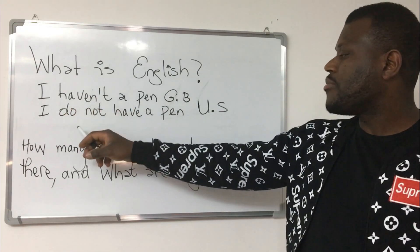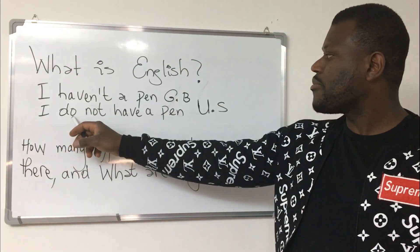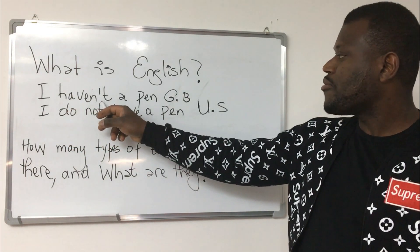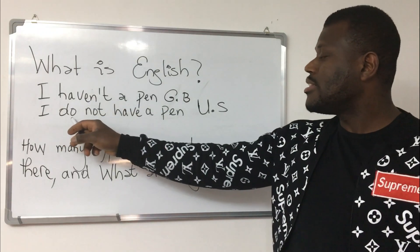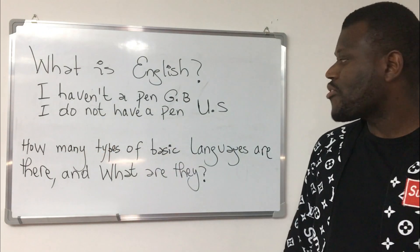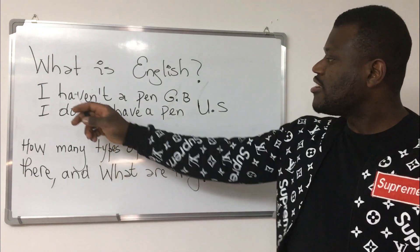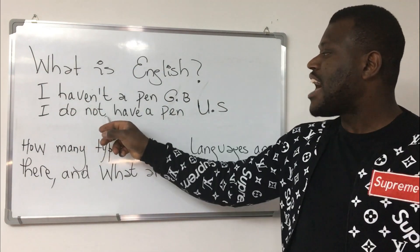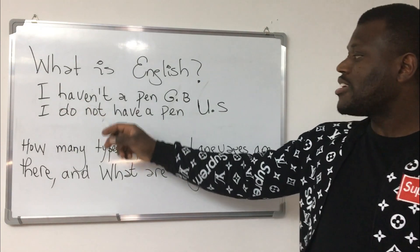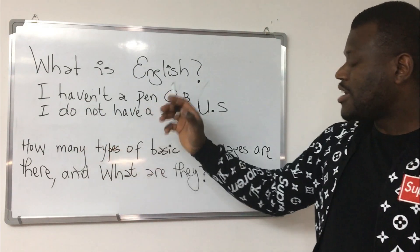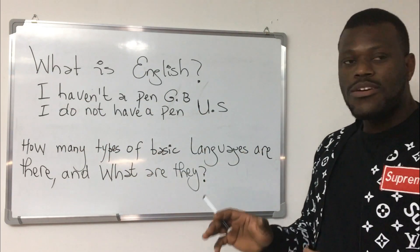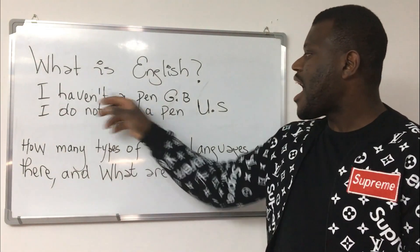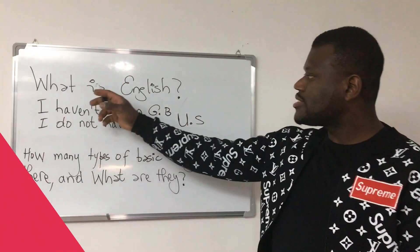Both 'have' and 'do' are auxiliary verbs. In British English we use the verb 'to have,' and in American English we use the verb 'to do.' Hence the difference: 'I haven't' versus 'I do not have a pen.'